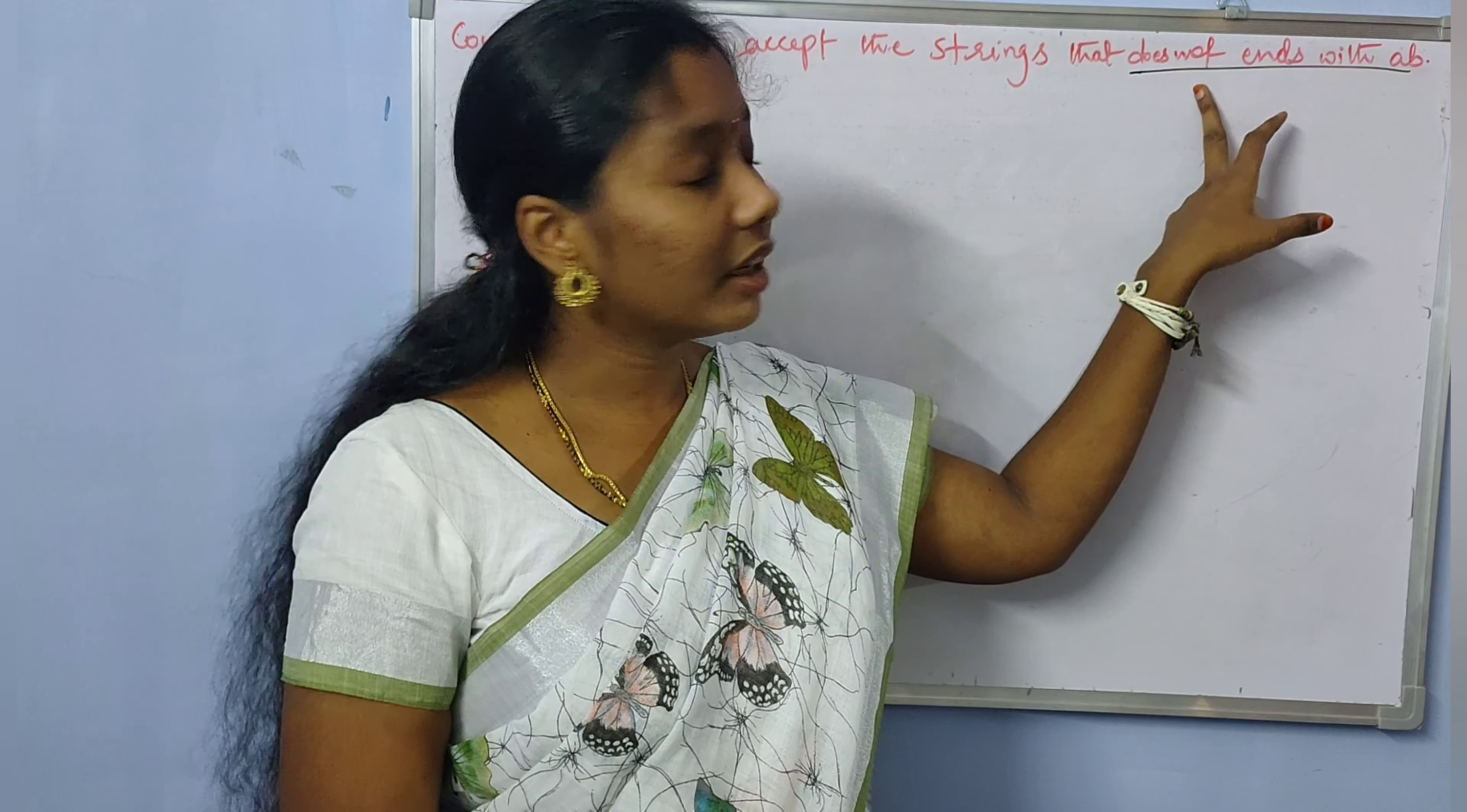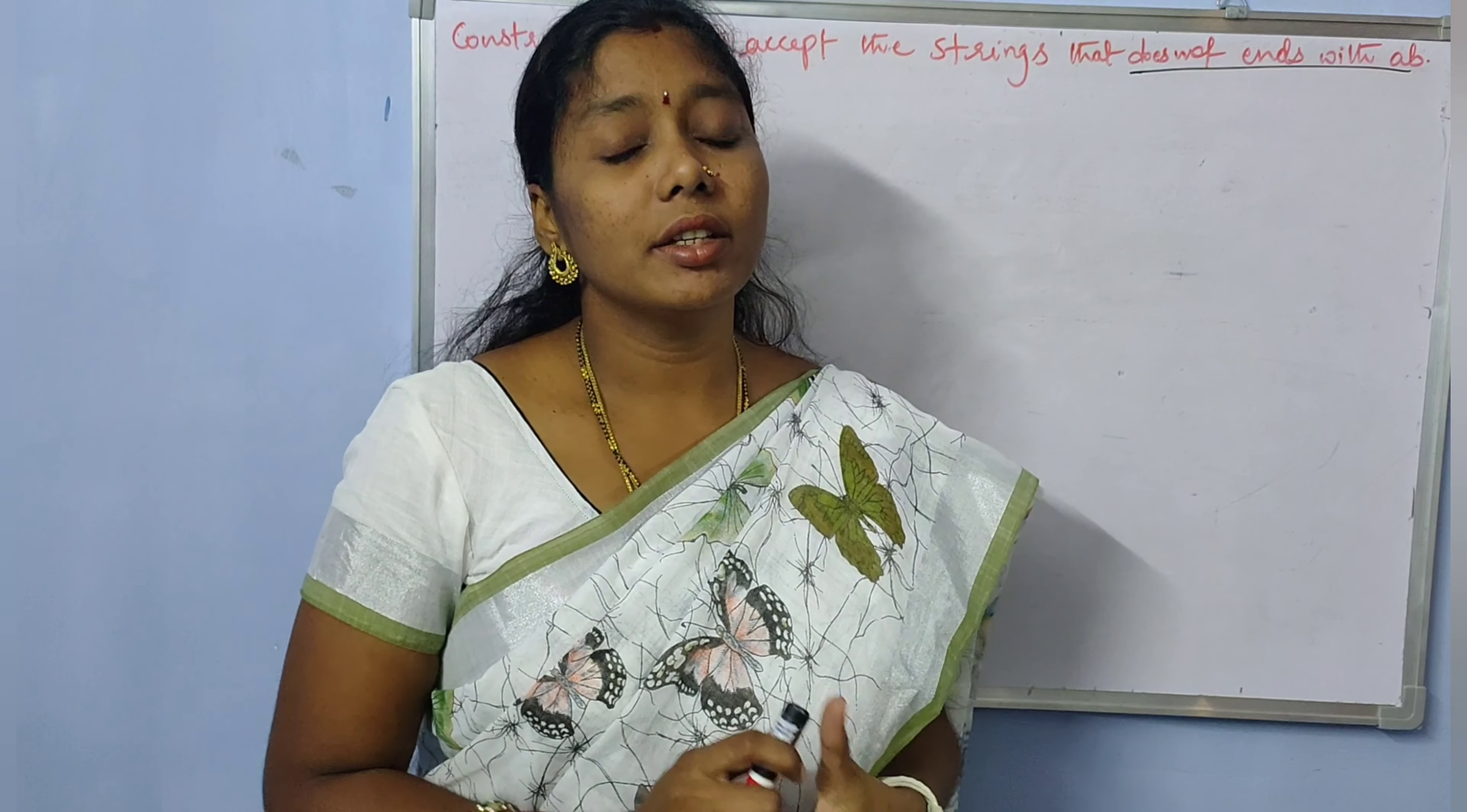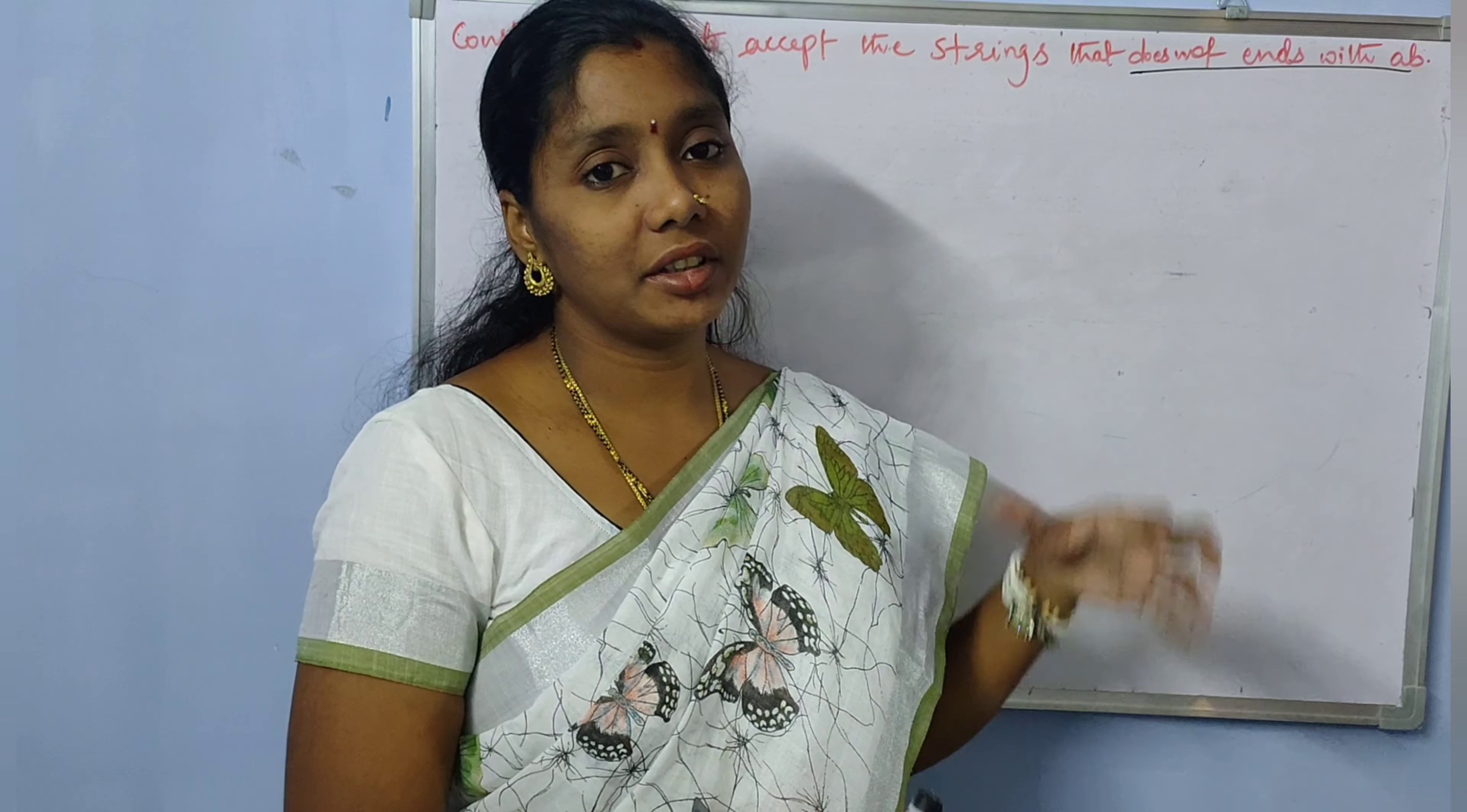First, we construct the DFA for strings ending with AB. Then we complement that, and we can get the DFA for the strings which does not end with AB.